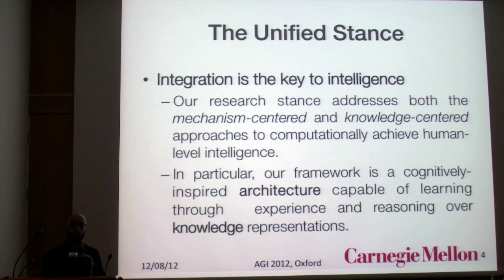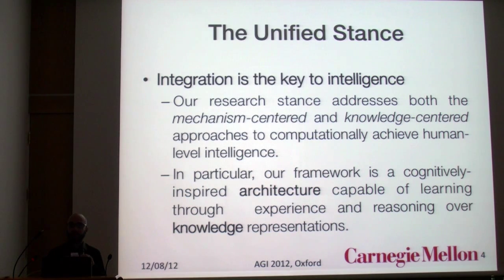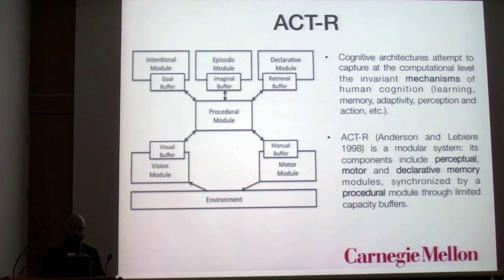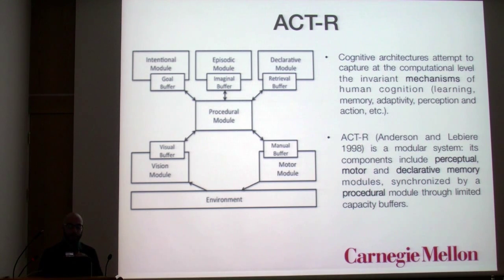If you want to achieve intelligent systems, you need to put together both mechanism-centered and knowledge-centered approaches. In our particular research avenue, we are trying to combine the cognitive architecture ACT-R with a knowledge representation system. ACT-R is a modular architecture that includes perceptual, motor, and declarative memory modules, which are synchronized by procedural modules to limited-capacity buffers.